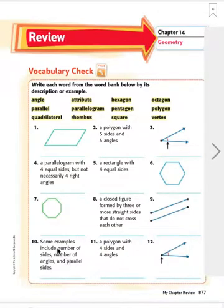Okay, number ten. Some examples include number of sides, number of angles, parallel sides. These are the things that distinguish one polygon from another. They're sort of like characteristics. That's another way to describe this word. And that word is attribute. So an attribute is kind of a characteristic or something that makes something special. Attribute.